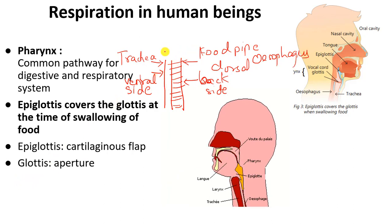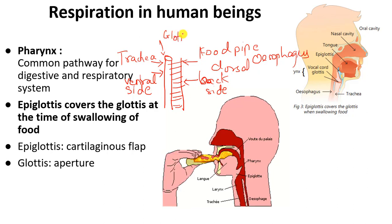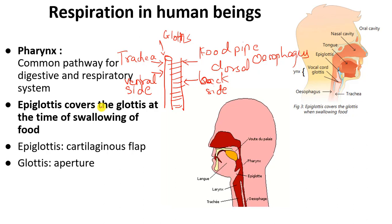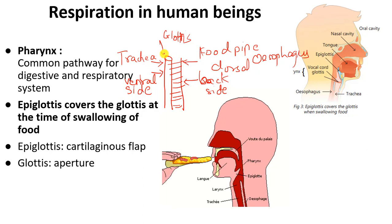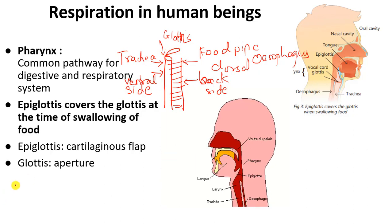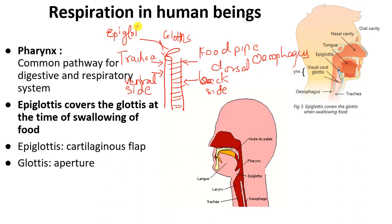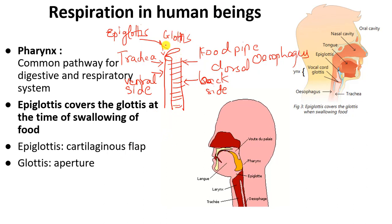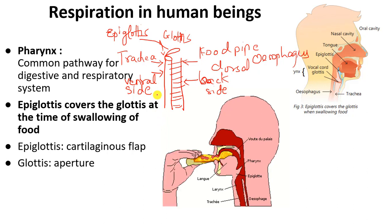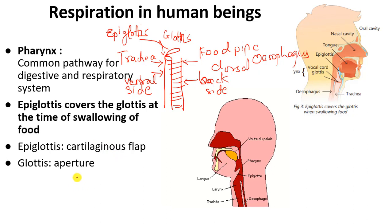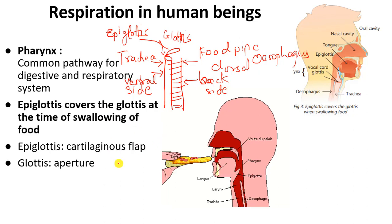What ensures that air always moves into the trachea and food always moves into the food pipe? At the opening of the trachea, there is a structure called the glottis — an opening or aperture. Above the glottis, there is a flap-like structure called the epiglottis. There is no harm if air enters the esophagus, but if food enters the wind pipe, it gets stuck and may cause problems in breathing. Hence, food should always enter the food pipe only.